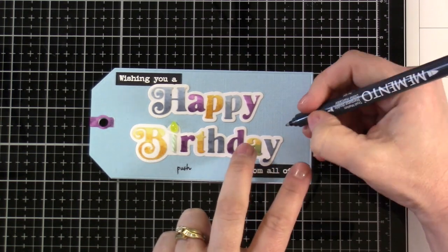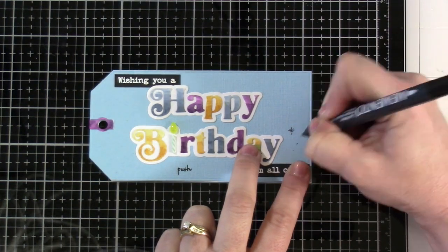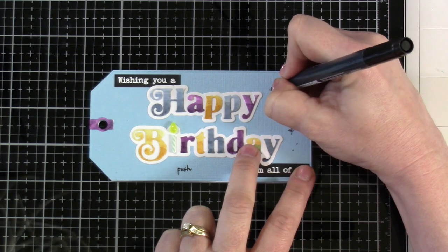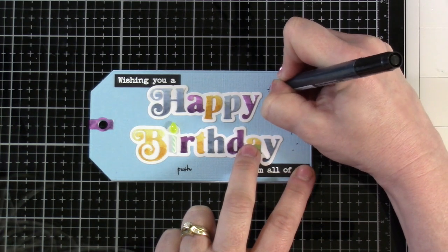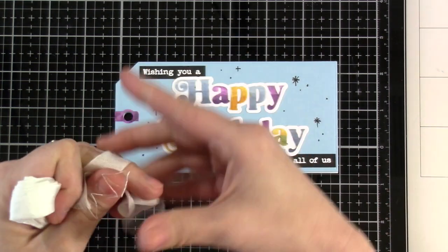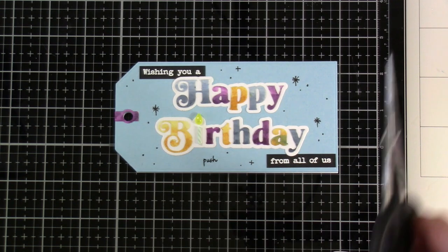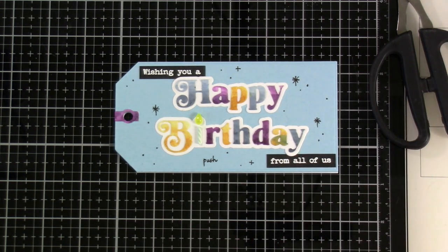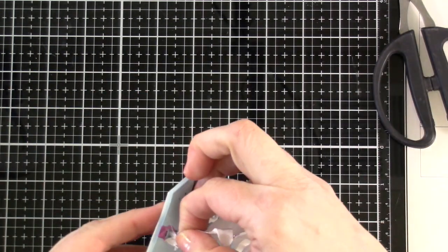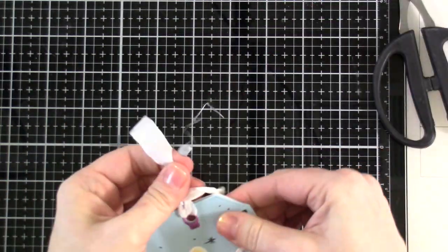I decided for some embellishment I'm going to bring in a black pen—this is a Memento pen—and I'm just going to make my own little stars and embellishments around it. I'm just making little retro stars everywhere. Now that that's done, I'll grab some white ribbon and attach it to our tag holder.